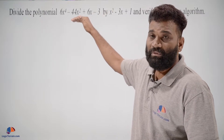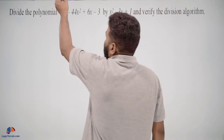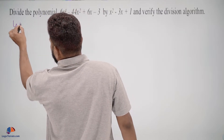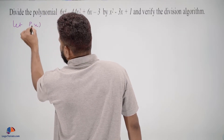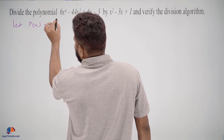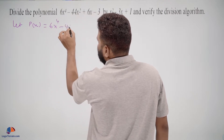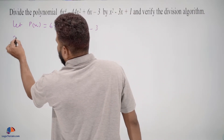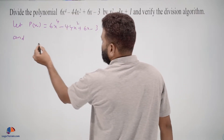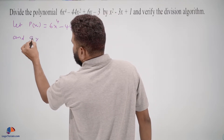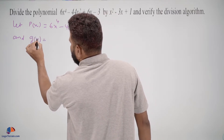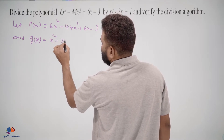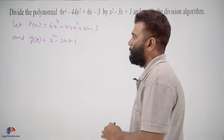Before doing the actual division, let us give names to the given polynomials. Let p(x) equal 6x to the power 4 minus 44x square plus 6x minus 3, and g(x) equal x square minus 3x plus 1.